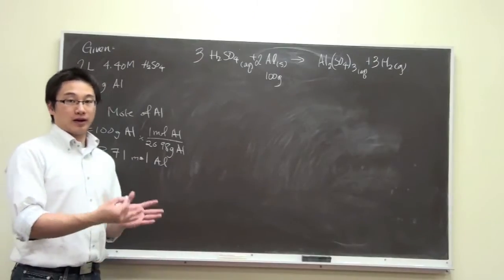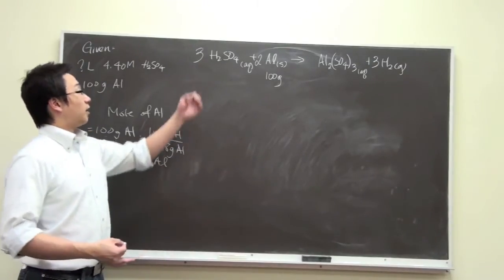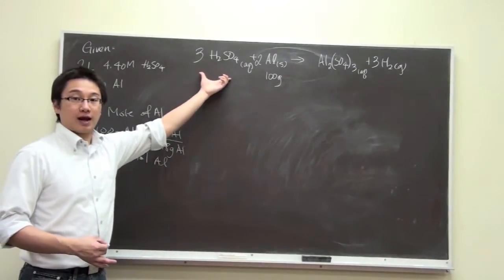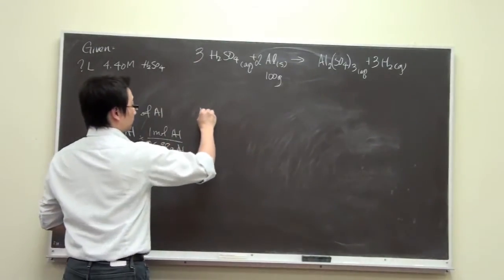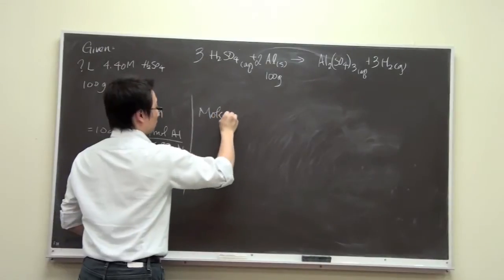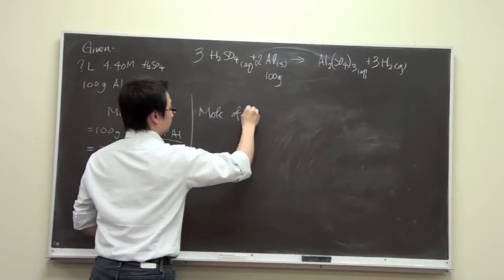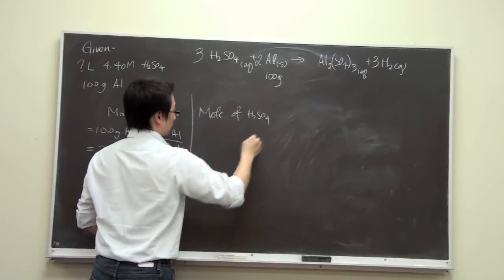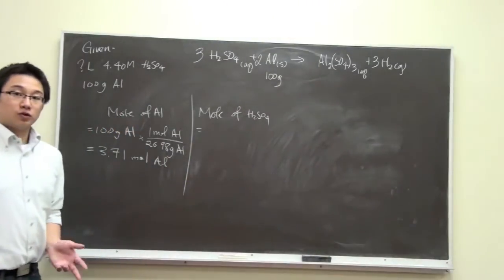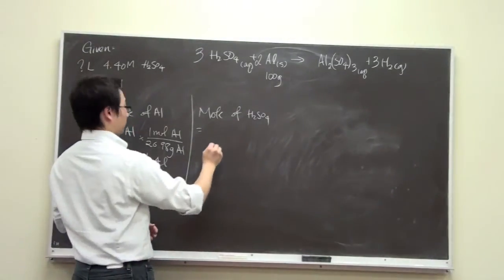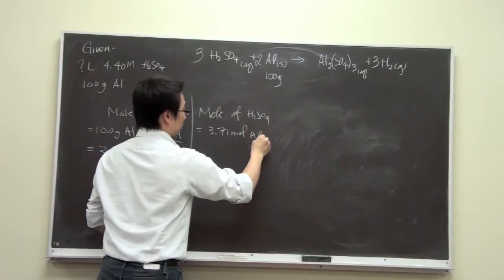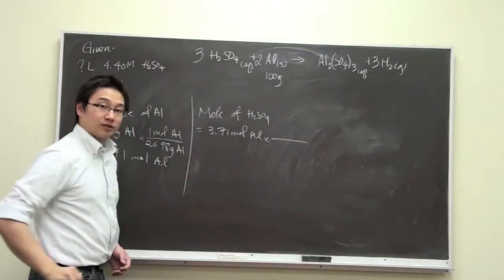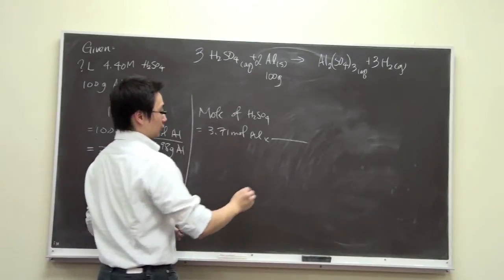Now we have mole and we can use mole ratio to find out the amount of sulfuric acid in terms of mole. What we can do is take this amount of moles of aluminum, and based on the balanced equation, we can make a mole ratio.